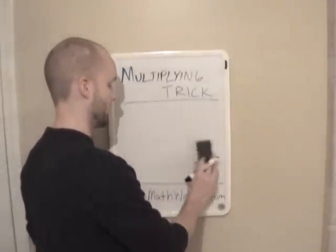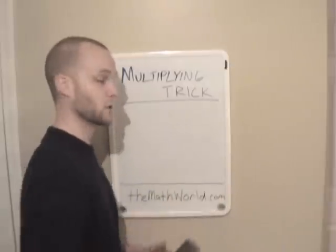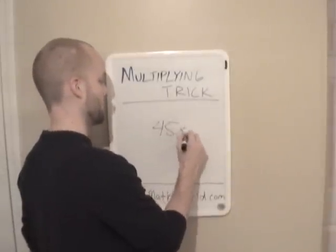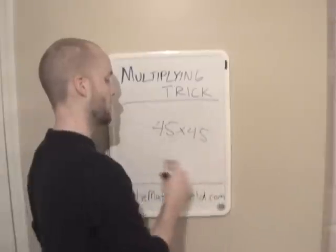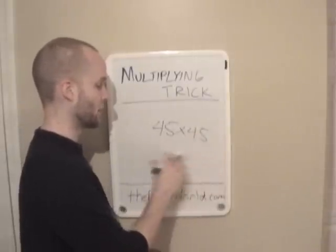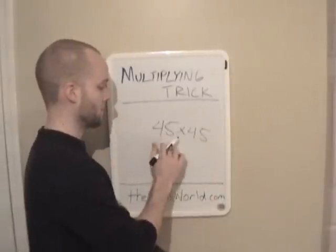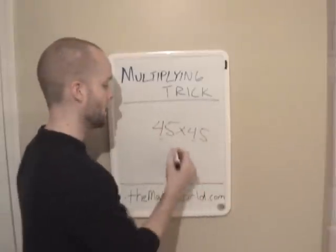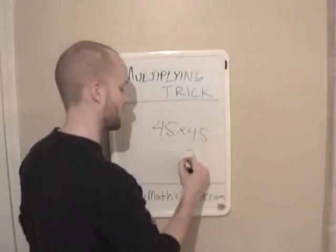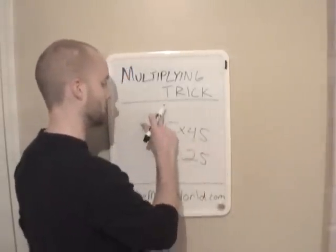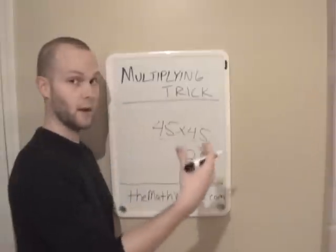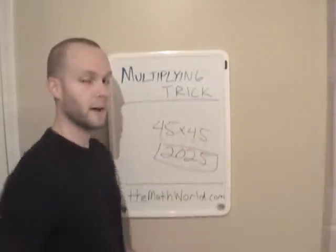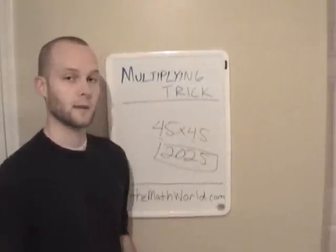And if you've watched the other video on how to square numbers ending in 5, it's going to look exactly the same, and this will show you why. Both the 4s are the same, and 5 plus 5 equals 10. So we do 5 times 5 equals 25, and 4 times the next highest number, which is 5 — 4 times 5 is 20. So 45 times 45 equals 2,025.